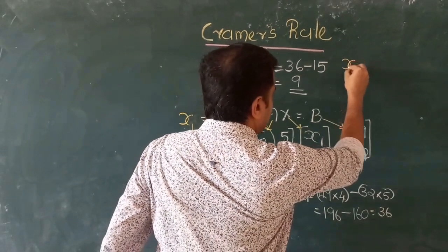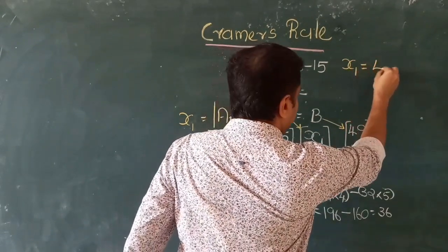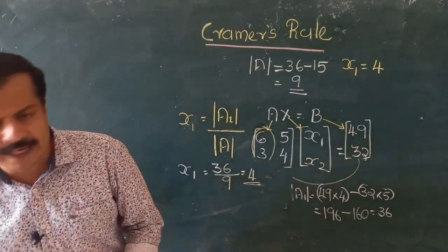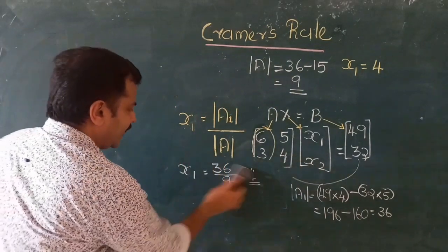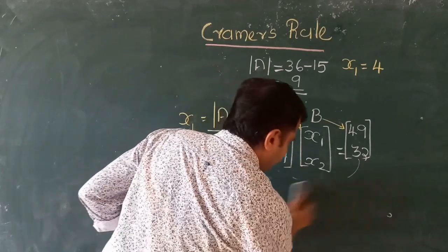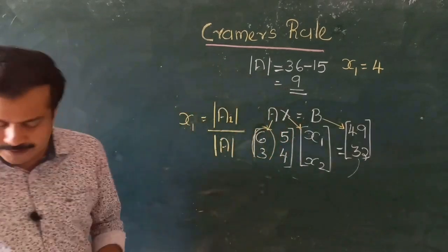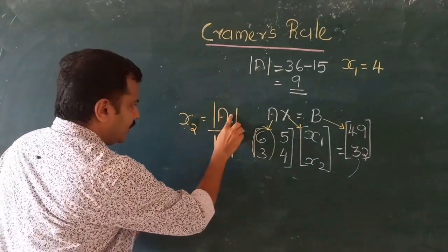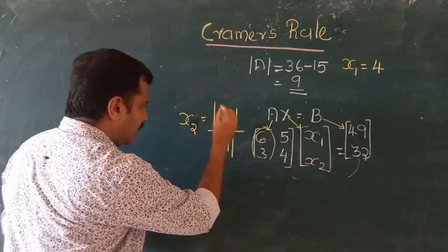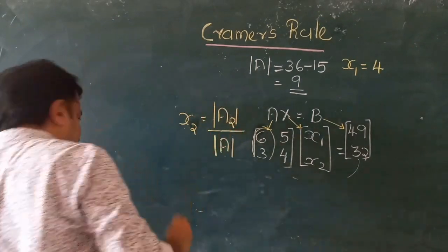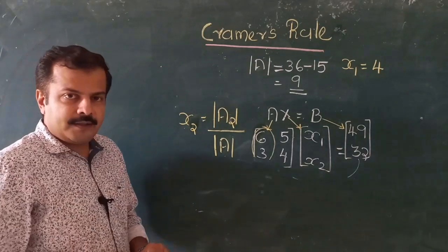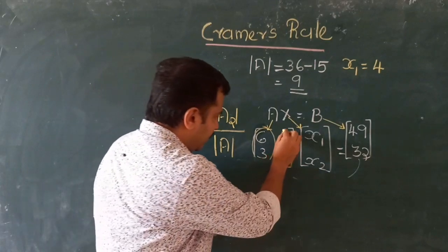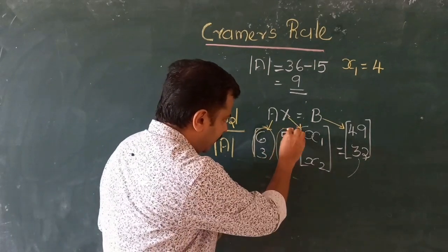We have the solution x1 equals 4. Now for x2 we do the same thing. We construct the matrix A2, and the equation will be x2 equals the determinant of A2 divided by the determinant of A. For constructing matrix A2, we replace the column corresponding to x2 with the constant vector.